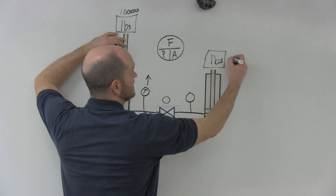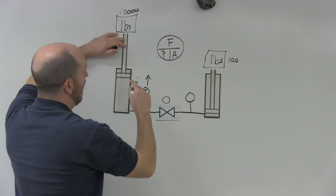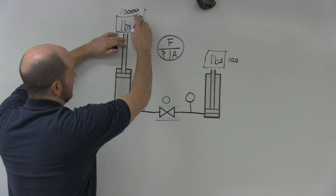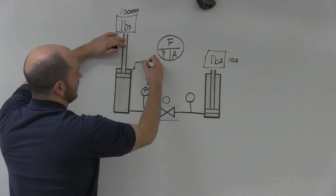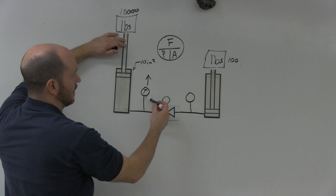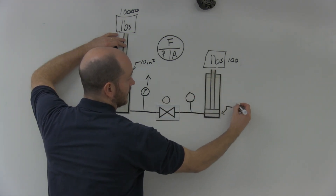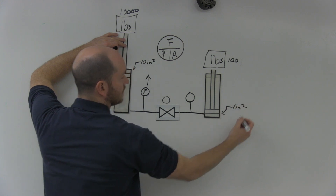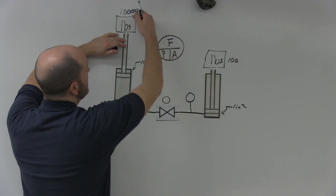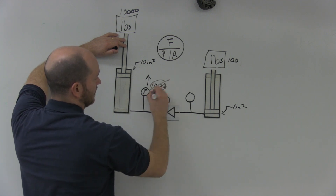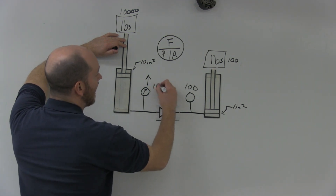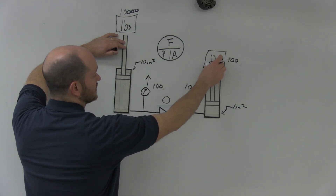Let's say this weight requires 10,000 pounds to lift, and this cylinder is 10 square inches while the other one is 1 square inch. The other cylinder requires 100 PSI to move. So I'm not going to read 1,000 PSI — I'm going to read 100 PSI everywhere, because of Pascal's Law. While flow is happening, my pressure is going to be about 100 PSI and this weight will move up.